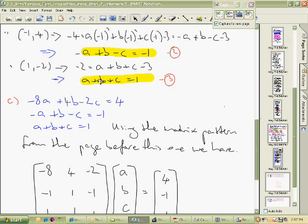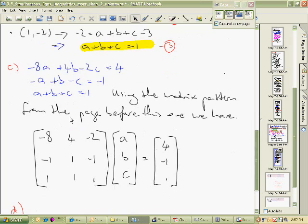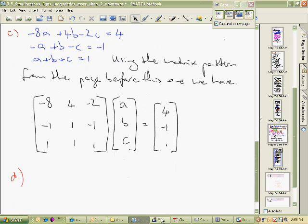This one here is 1A + 1B + 1C, and that equals 1. So there's the equations represented in matrix form. How though to put it into the calculator?